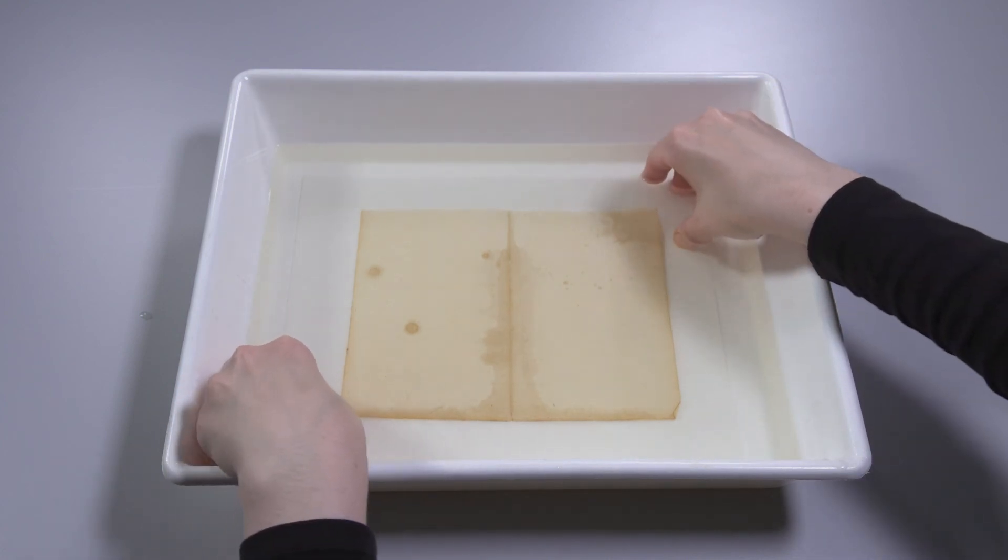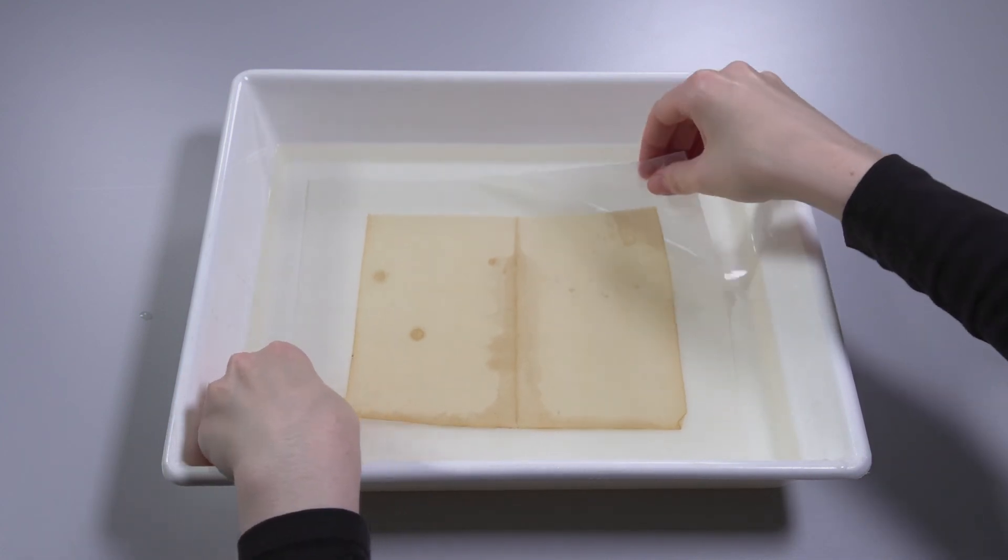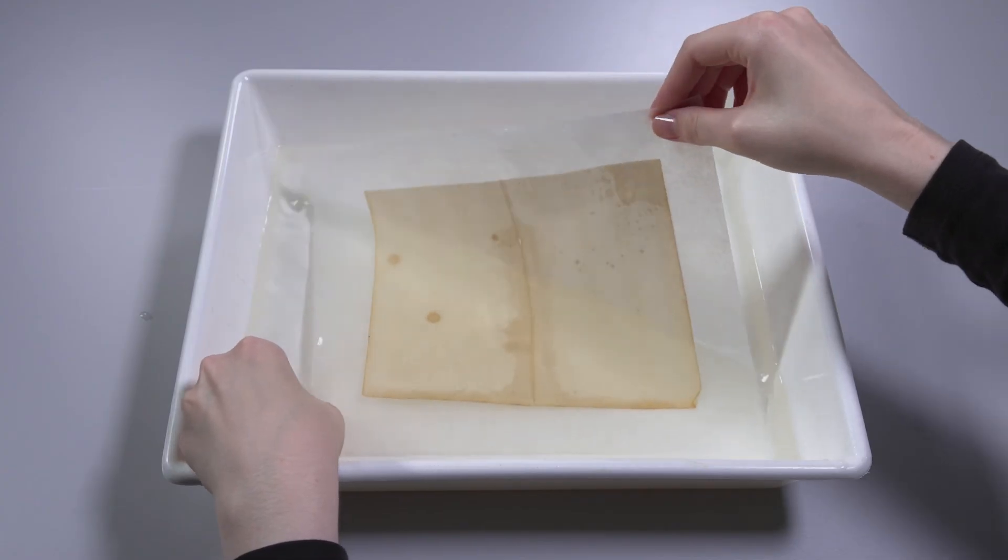At the end of the cleaning process or when the water is changed, the object is lifted out of the aqueous bath together with the substrate. The paper sticks to the surface of the substrate and the water drips off over one corner.